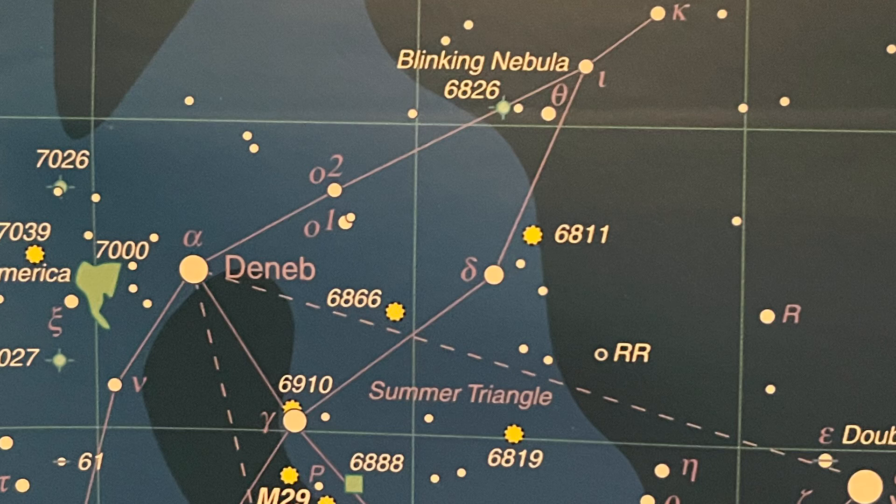There are many more nebulae for you to explore in the night sky, and we're going to look at some. Some of my favorites are the Blinking Planetary Nebula NGC 6826 in Cygnus, the Blue Flash Nebula NGC 6905 in Delphinus, and NGC 3242 in Hydra — the Ghost of Jupiter — and the Saturn Nebula NGC 7009 in Aquarius, to name just a few. But there are many others, so get out there and find a few of your own.